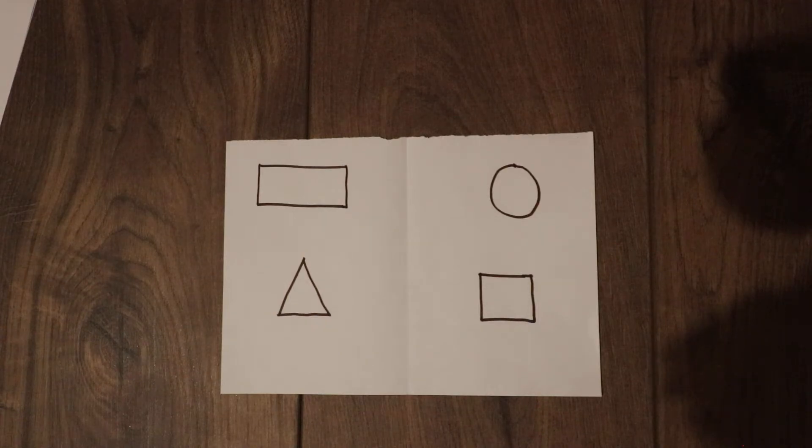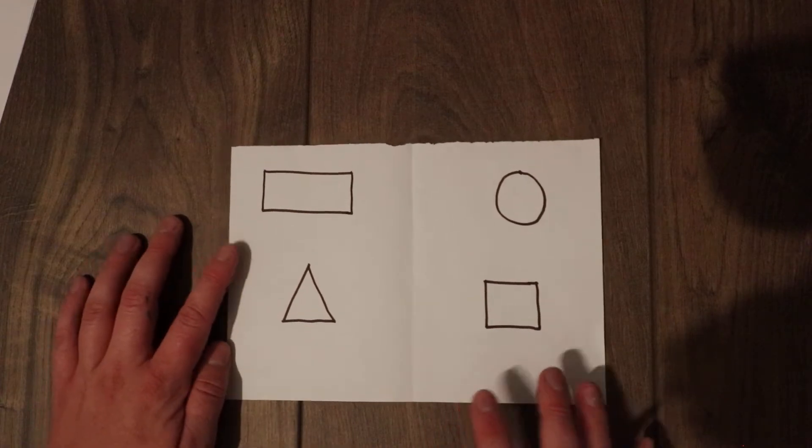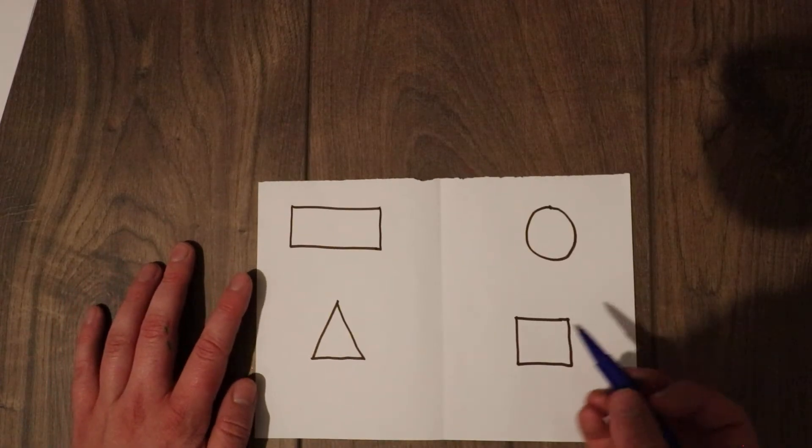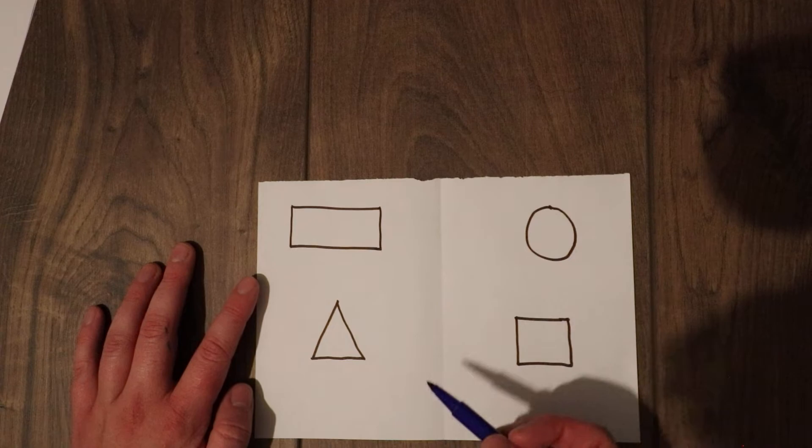I'm going to have a go at finding half of these shapes and you need to tell me whether I'm right or wrong. I'm going to start with my rectangle. Now, I think you have to have the same on both sides.